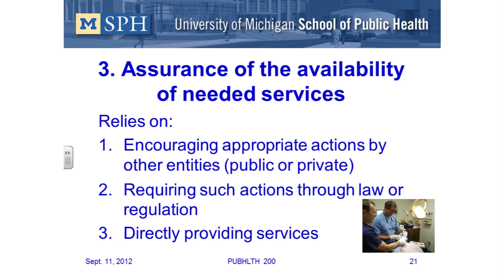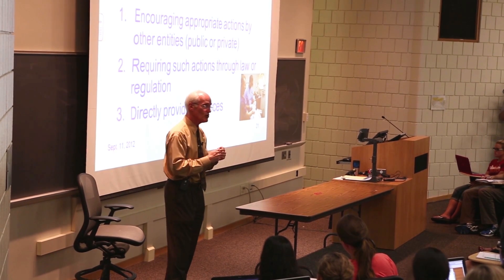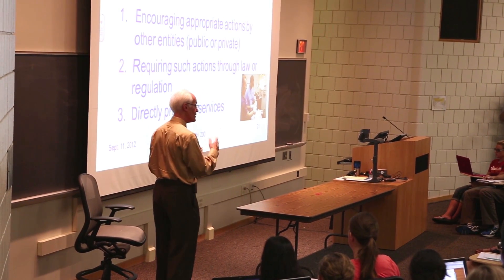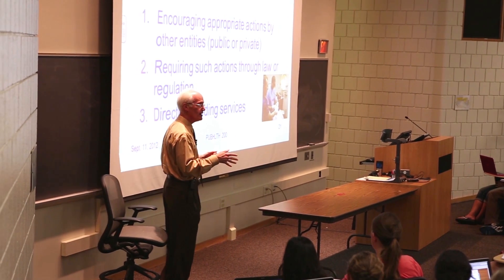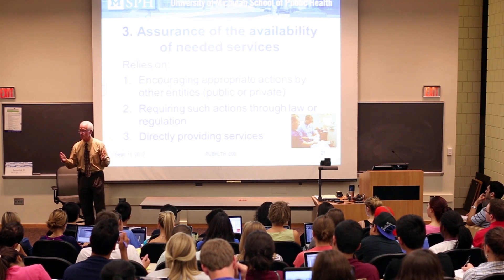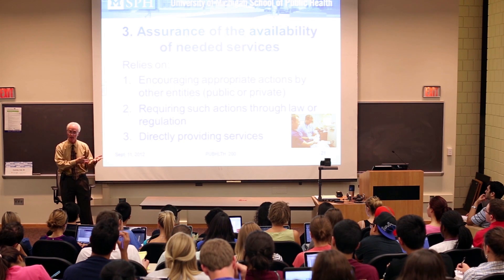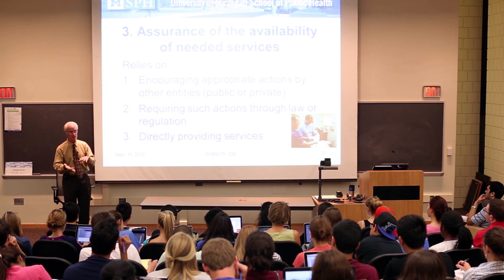The Obamacare law is going to address a significant proportion of those without coverage. What does public health do? It can encourage appropriate action by other entities — for example, encouraging hospitals to take more charity care — or require such actions through law or regulation. Hospitals are required to allow people in who can't pay, and we cover that through our health insurance premiums and taxes, which go up to cover uncompensated cases.